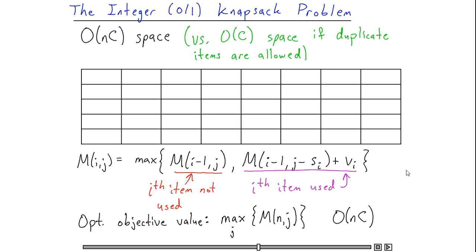Let's look at a matrix of all of the m i j values computed by our algorithm. In order to compute some value m i j, remember that we take the maximum of m of i minus 1 j, which is going to be the entry above m i j in this table, and m of i minus 1 j minus si, which is going to be an entry on the previous row, but somewhere to the left of m i j.